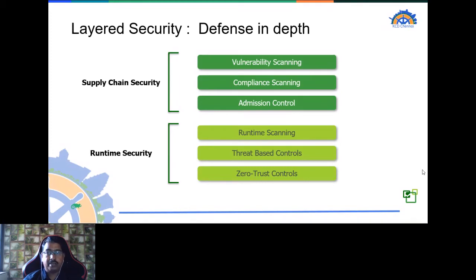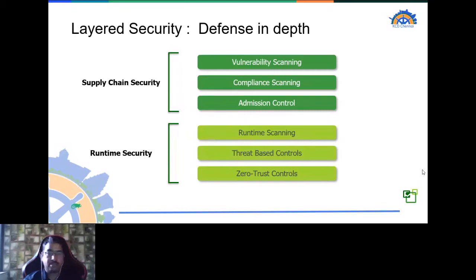Security in the container world can largely be segregated into two paradigms: supply chain security and runtime security. Supply chain security primarily covers vulnerability scanning, compliance scanning, and admission controls. Many tools are pretty good in this space and NeuVector is on par with them, if not better. Where NeuVector really excels is in runtime security, which comprises not just scanning containers but also scanning the orchestrator as well as the host operating system. It also covers threat-based controls and zero-trust controls.